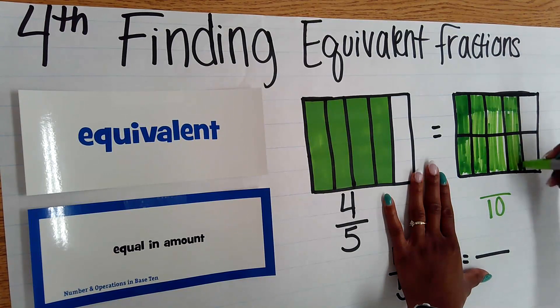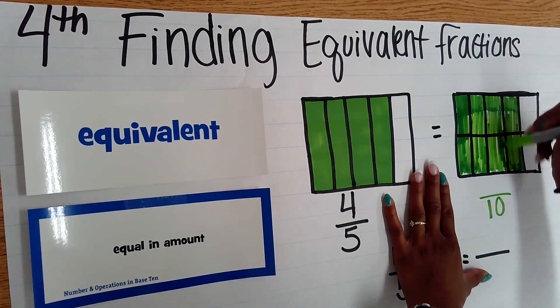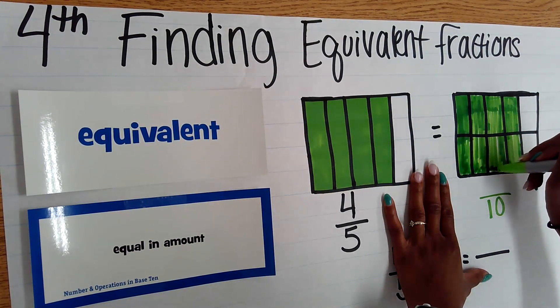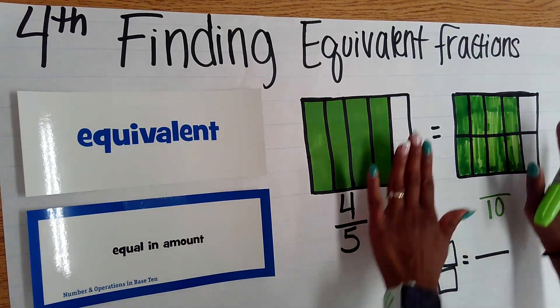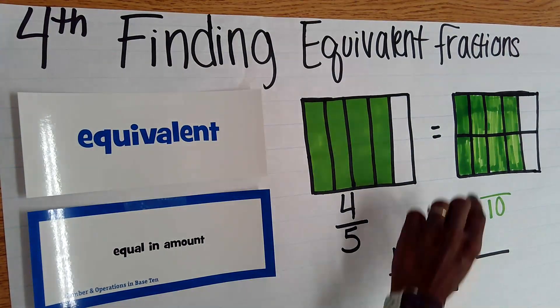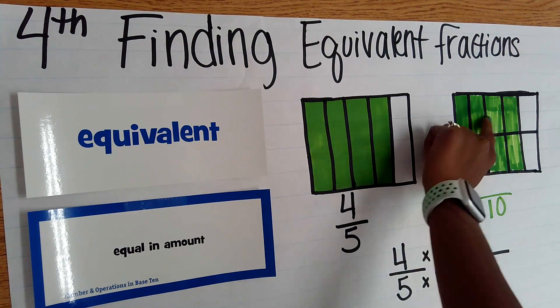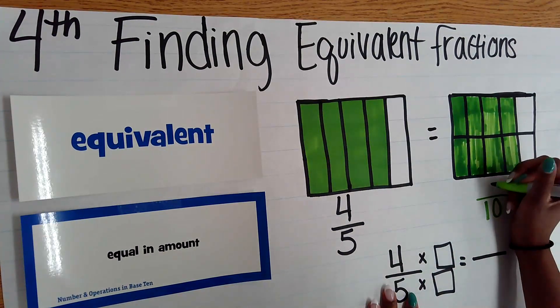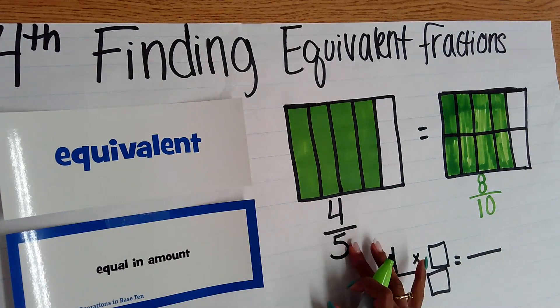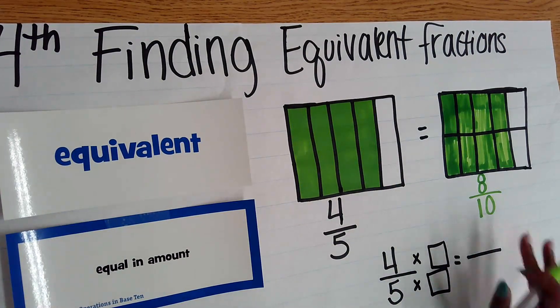The shaded space will give us our numerator and our equivalent fraction. So now that I have the same equal amount of space shaded in in both holes, I just need to count the parts. So now I have two, four, six. I have eight. Eight out of ten parts shaded in. So my four fifths is equivalent to eight tenths.